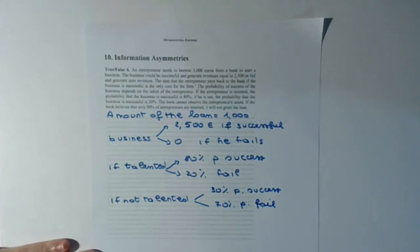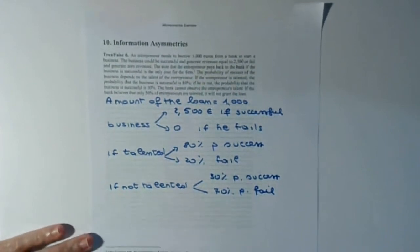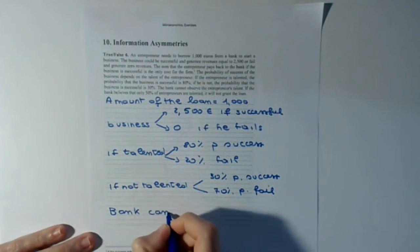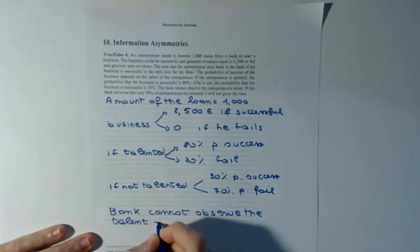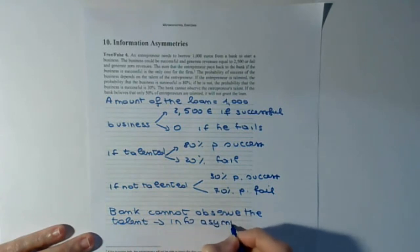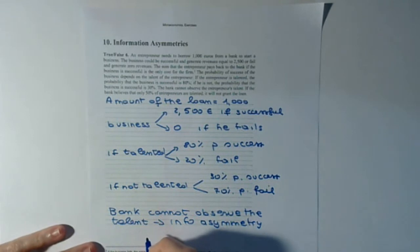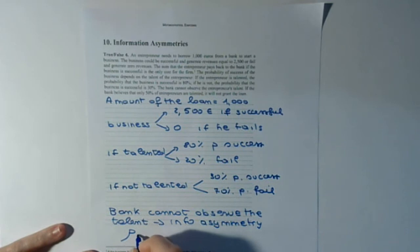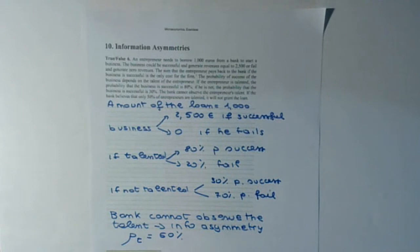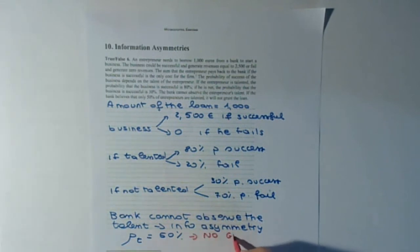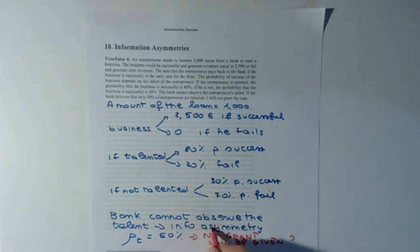The bank obviously cannot observe the talent — this is where the information asymmetry arises. The bank believes that 50% of entrepreneurs have talent. Out of all this information, we have to say whether it is true, false, or uncertain that the grant will not be given.